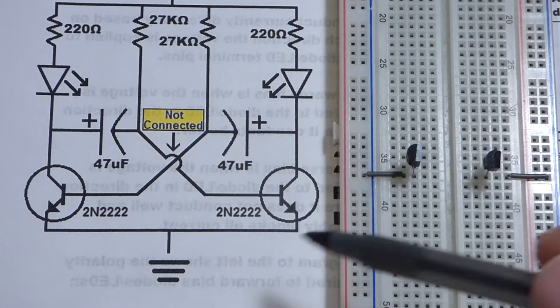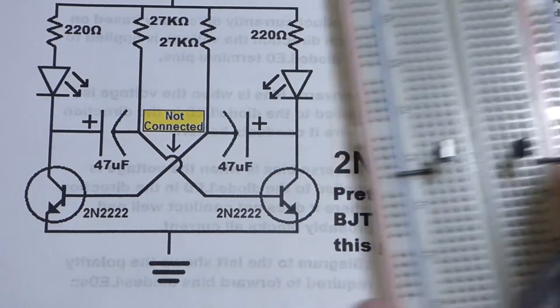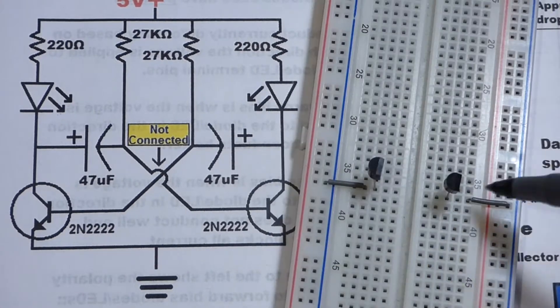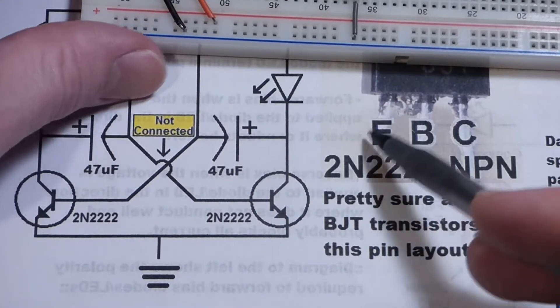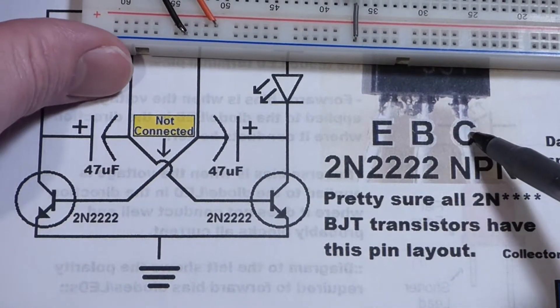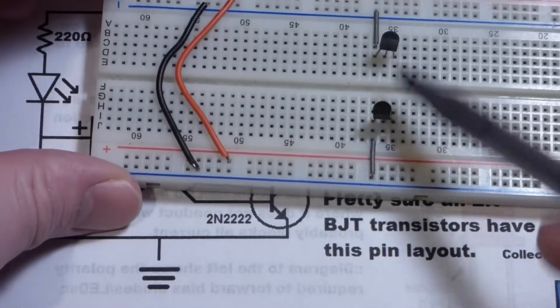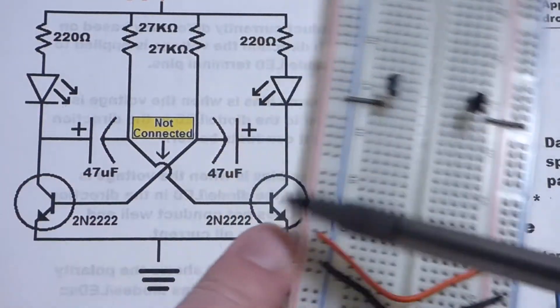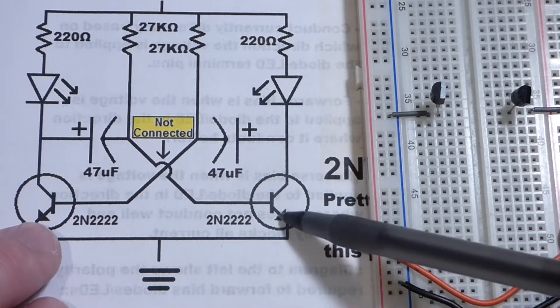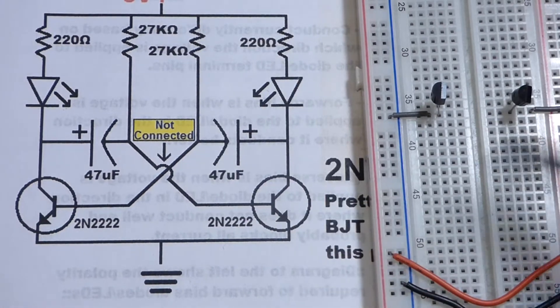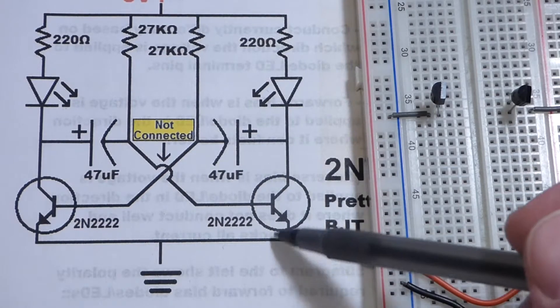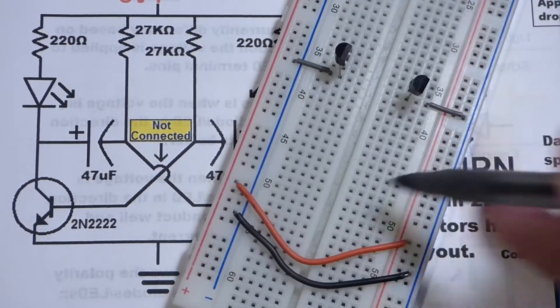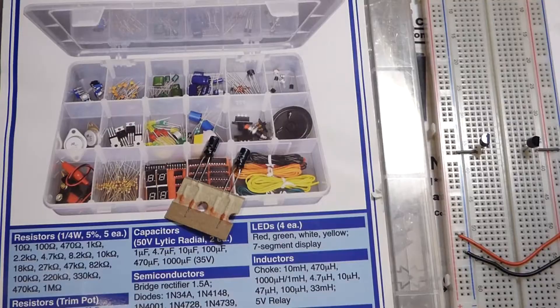I added two 2N2222 transistors. The flat side is facing to the right, so when we turn it this way the pin on the left is the emitter, the pin in the middle is the base, and the pin on the right is the collector. It's an NPN transistor, the arrow's not pointing in. The emitter is connected directly to ground, which we did with the gray jumpers right there.